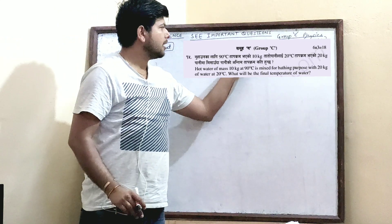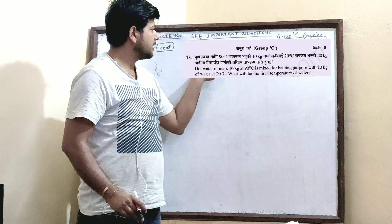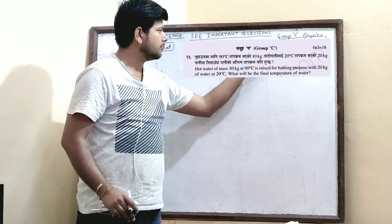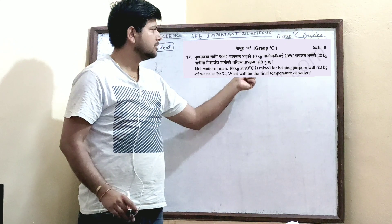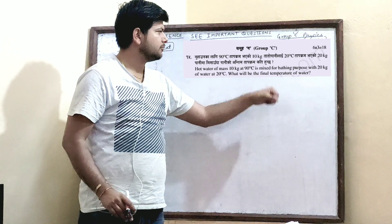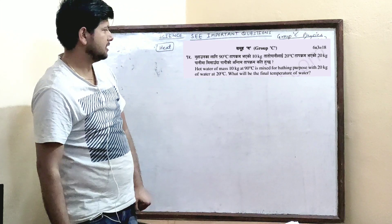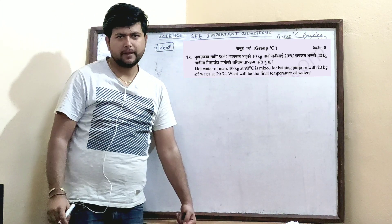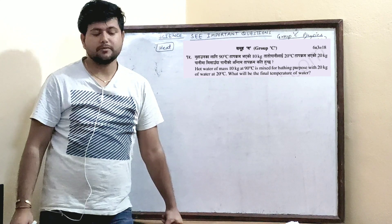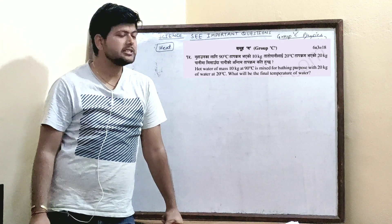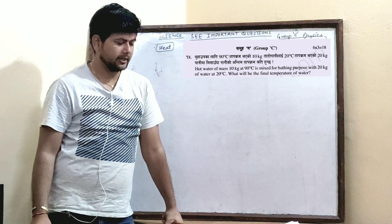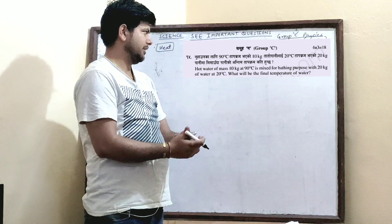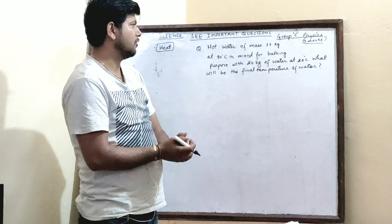Hot water of mass 10 kg at 90 degrees Celsius is mixed for bathing purposes with 20 kg of water at 20 degrees Celsius. What will be the final temperature of water? The heat equation is called the principle of calorimetry.